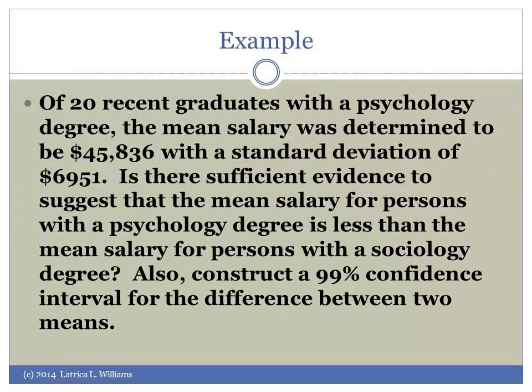Of 20 recent graduates with a psychology degree, the mean salary was determined to be $45,836 with a standard deviation of $6,951. Is there sufficient evidence to suggest that the mean salary for persons with a psychology degree is less than the mean salary for persons with a sociology degree? Also, construct a 99% confidence interval for the difference between two means.